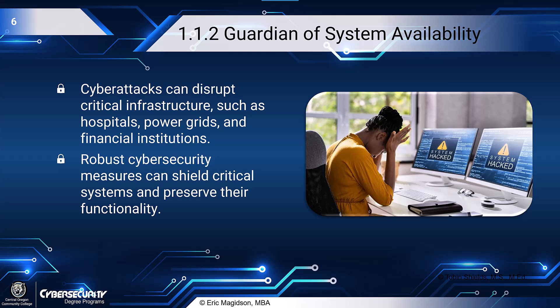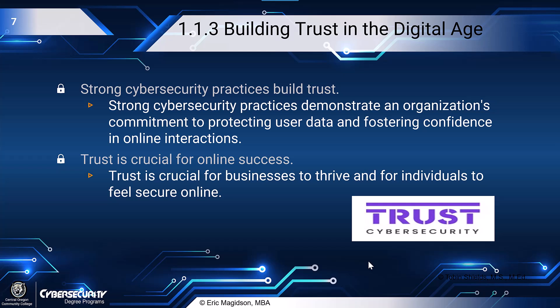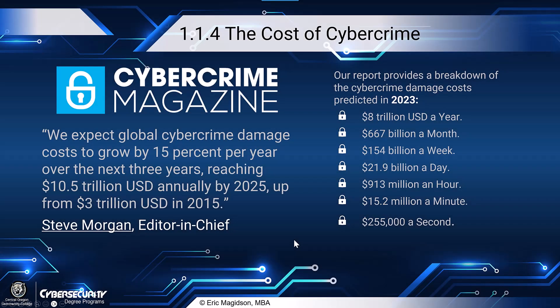We'll go through a lot more detail as we venture through this course series. Cyber attacks can disrupt critical infrastructure. Robust cybersecurity measures can shield critical systems and preserve their functionality. However, as we know, it's never foolproof - all these changes are happening constantly. Through good cybersecurity practices, cybersecurity infrastructure, and strong cybersecurity demonstrated to consumers and other businesses, we can build trust. But if we get breached, that trust is breached as well. We can put forth a lot of cybersecurity effort and still have that trust broken through a ransomware attack.